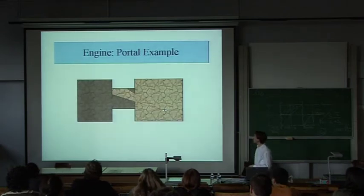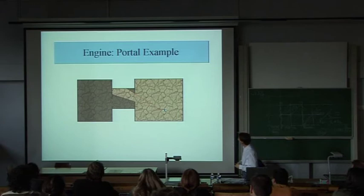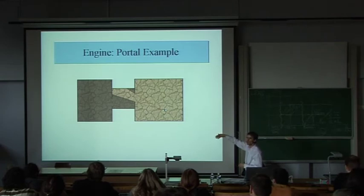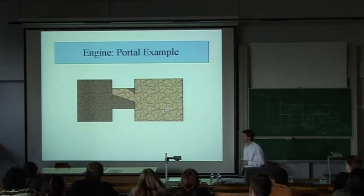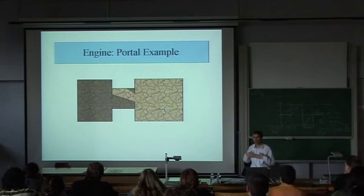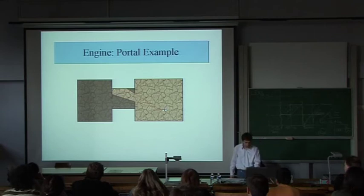Here you see an example of a top view of a 3D world with three sectors. The camera can see into the second sector through the doorway, but it cannot see the third sector because the second portal is completely out of view. This is very useful for performance — the third room can contain thousands of objects, but if the camera doesn't see the portal to that room, it has zero overhead. The objects in that other sector are not even considered for rendering.